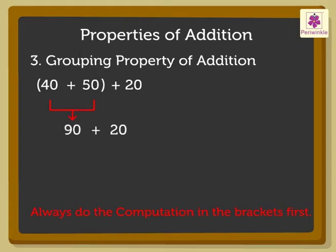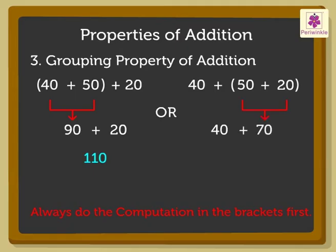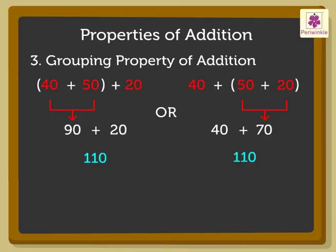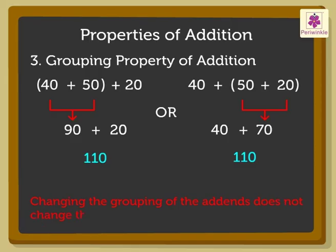Now, let us change the addends in the brackets and add them. Therefore, we have 40 plus 50 plus 20 in bracket. So, 40 plus 70 is equal to 110. Thus, we come to know that 3 or more numbers can be added by putting them into groups placed in brackets. Changing the grouping of the addends does not change the sum.